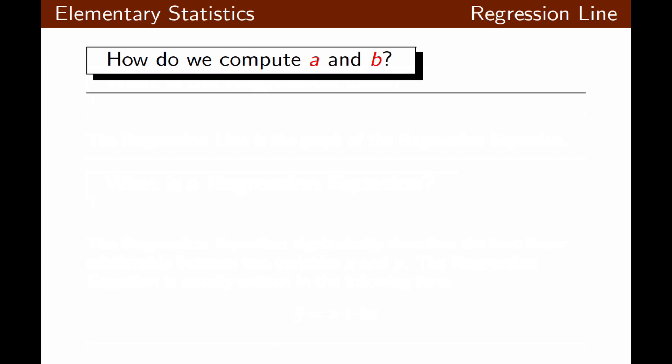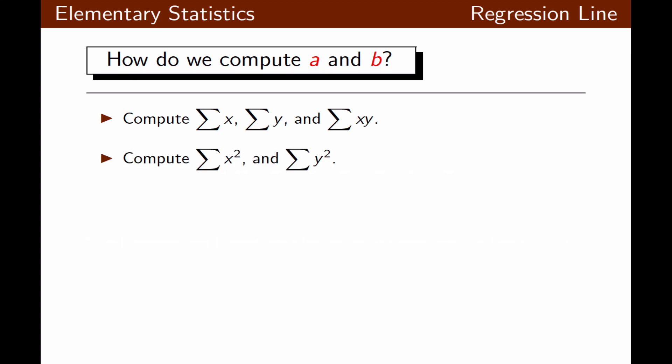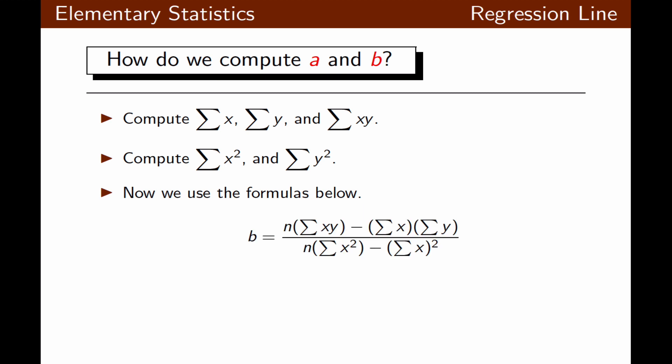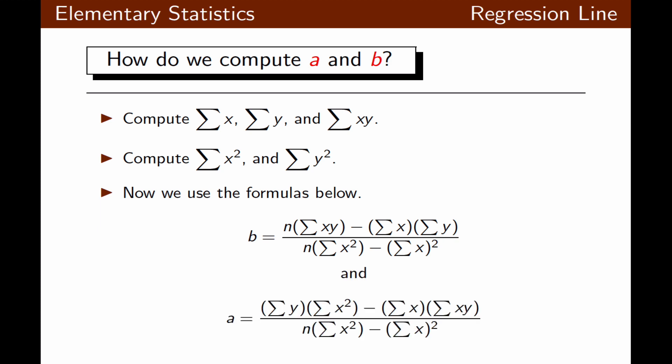How do we compute a and b? We're going to compute the summation of x, the summation of y, the summation of xy, the summation of x squared, and the summation of y squared. It is recommended to do this within a table to organize the information. Then we use the formulas for b and for a, where n is the number of ordered pairs in the problem.